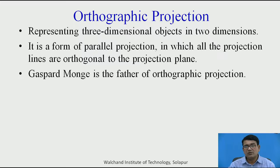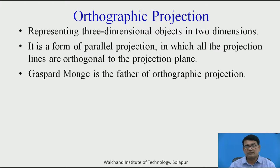When you convert the object into two dimensions, you have to draw the front view, top view, and side view. Secondly, it is a form of parallel projection in which all the projection lines are orthogonal to the projection plane. The pioneer of this orthographic projection is Gaspard Monge.